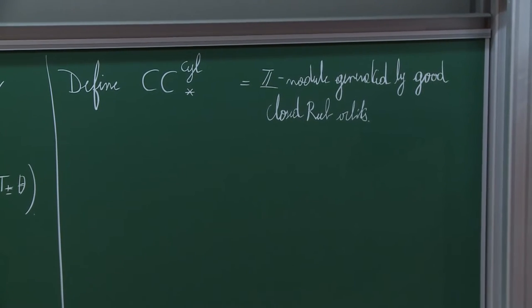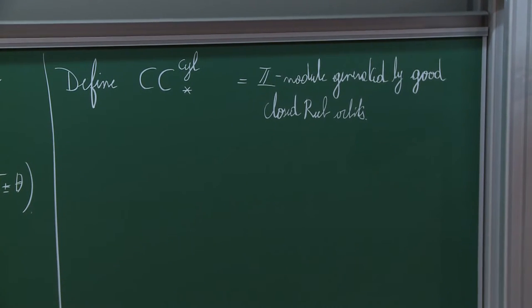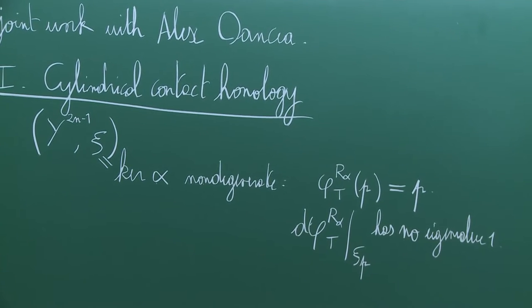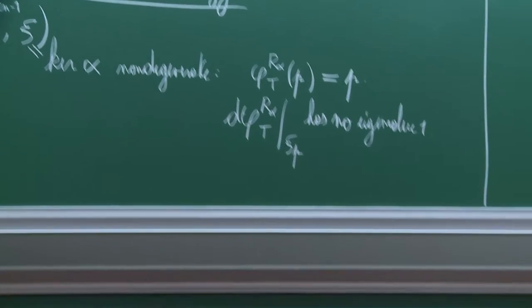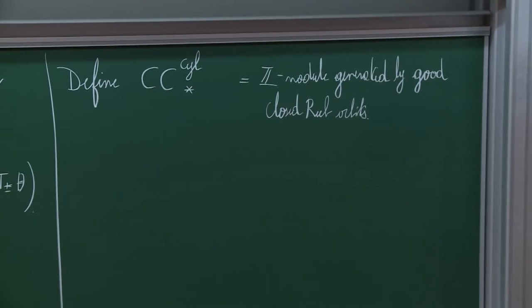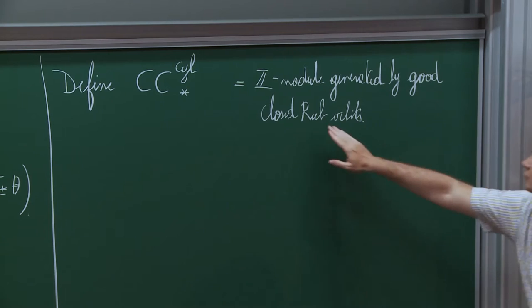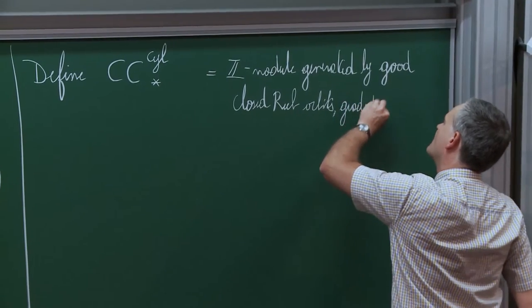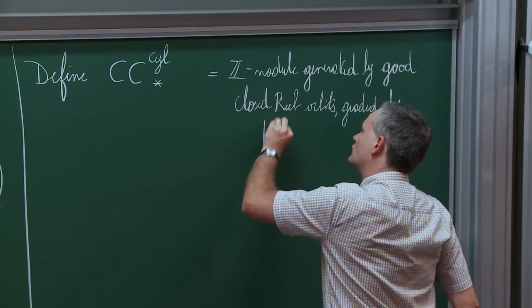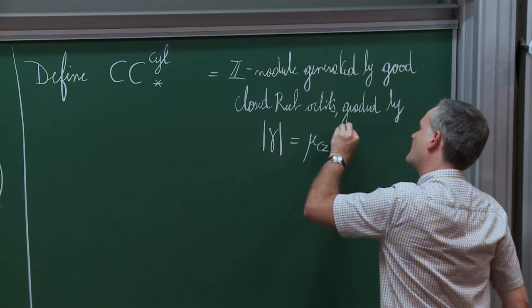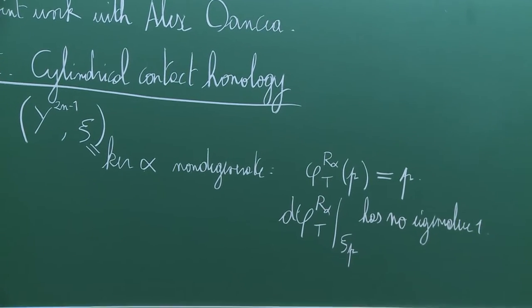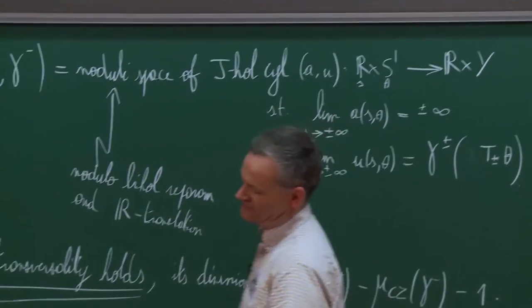This complex will be the ℤ-module generated by all good closed Reeb orbits. What 'good' means is the following: for every periodic trajectory of the Reeb field, there exists a shortest trajectory with the same image. You can compute the Conley-Zehnder index for the trajectory and its simple counterpart. It is good if and only if the parities of the Conley-Zehnder indices coincide. This is a purely numerical, easy-to-check condition on the periodic orbits.